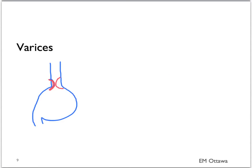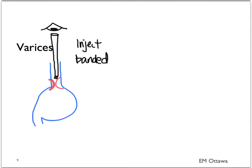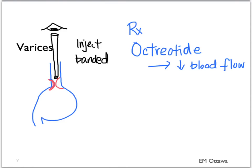For varices, endoscopy is again the main treatment. During endoscopy, esophageal varices can be injected or banded to decrease bleeding. There are also a few medications we can give, including octreotide, which decreases blood flow to the gut and therefore decreases bleeding. Another medication we don't often think about is an antibiotic — usually a fluoroquinolone — which should be given to patients who have cirrhosis with a variceal bleed, as it decreases infection and mortality.